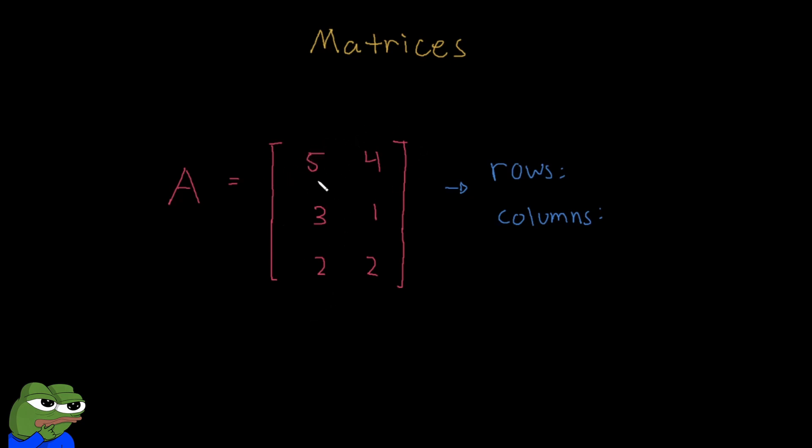So here in particular, we see that there are three horizontal rows like this. So we have three rows, and we have two vertical columns like this. So we have two columns.